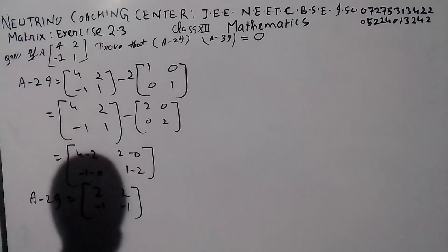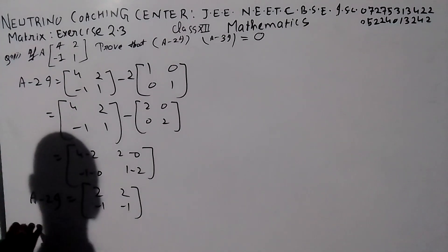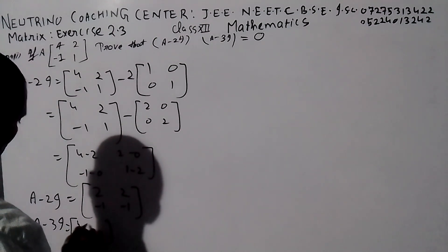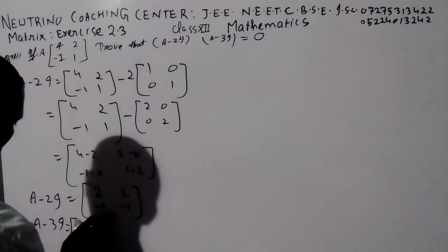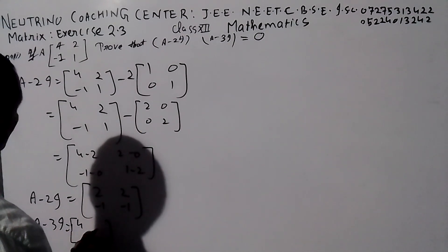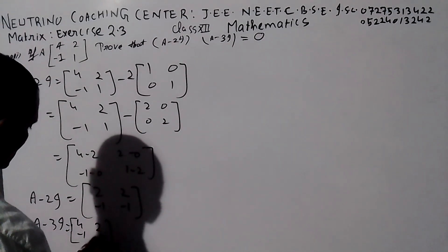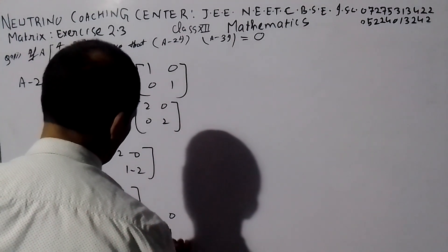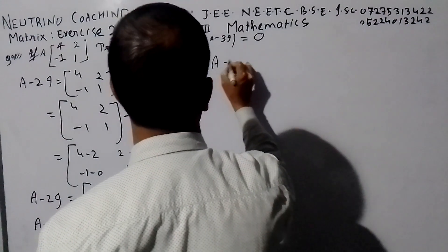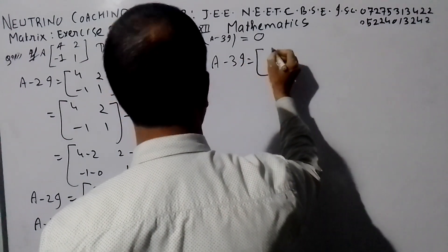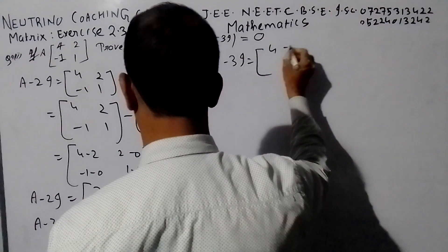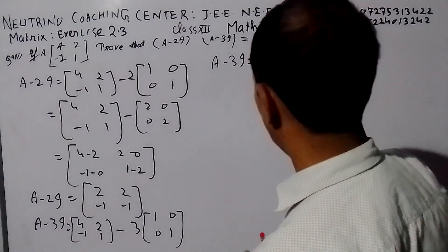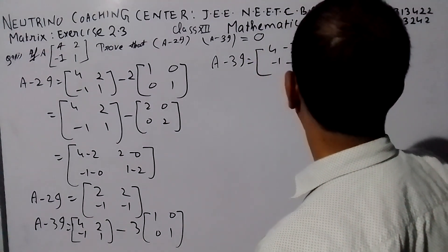Now a minus three i — we call it a minus three i. A minus three i is equal to four. A is equal to four: two, minus one, one. Three i: three, one, zero, zero. So a minus three i, a minus three i: minus three, two minus zero, minus one minus zero, one minus three.